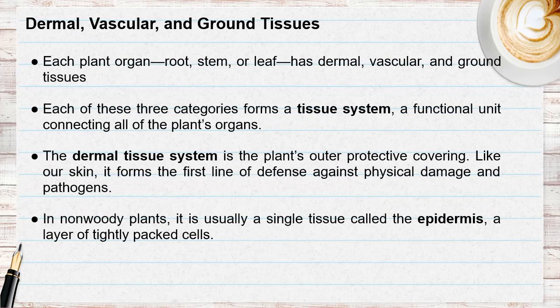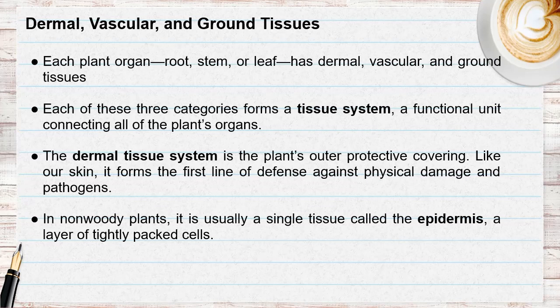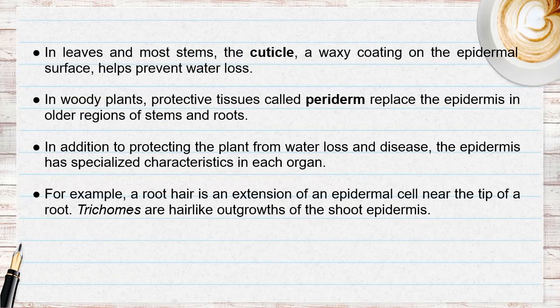Now let's move to the tissues present in plants. There are three types: the dermal, vascular, and ground tissue. The dermal tissue is the plant's outer covering, like our skin — it protects the plant against physical damage and pathogens. In non-woody plants it is usually a single layer called the epidermis, while in leaves and most stems the cuticle helps prevent water loss. In woody plants, a protective tissue called the periderm replaces the epidermis, and the epidermis has specialized functions in each region.